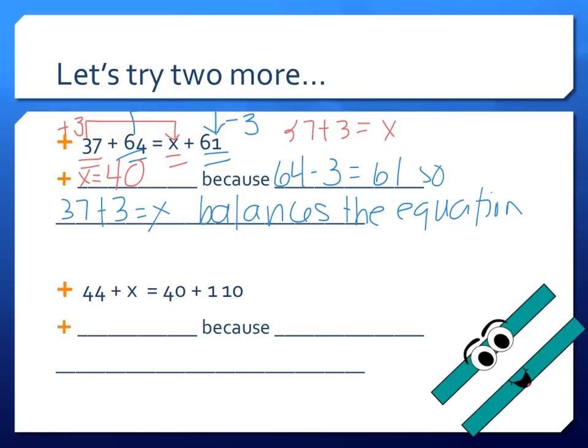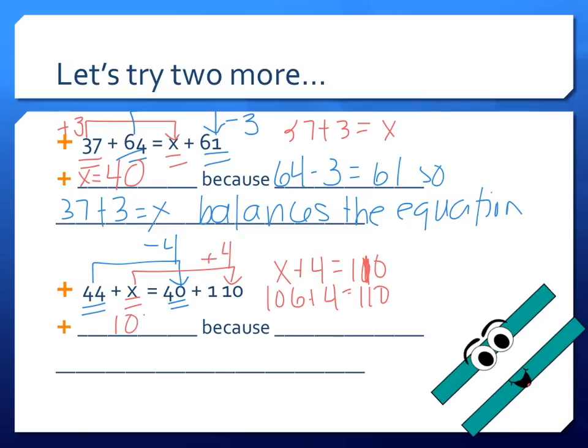Let's try one more. Compare 44 to 40. I subtract 4. So x, what do I have to do to get to 110? The opposite of subtracting 4, which is adding 4. So x plus 4 is 110. That makes x 106. 106 plus 4 is 110. So x equals 106 because 44 minus 4 equals 40. So x plus 4 equals 110 to balance the equation.